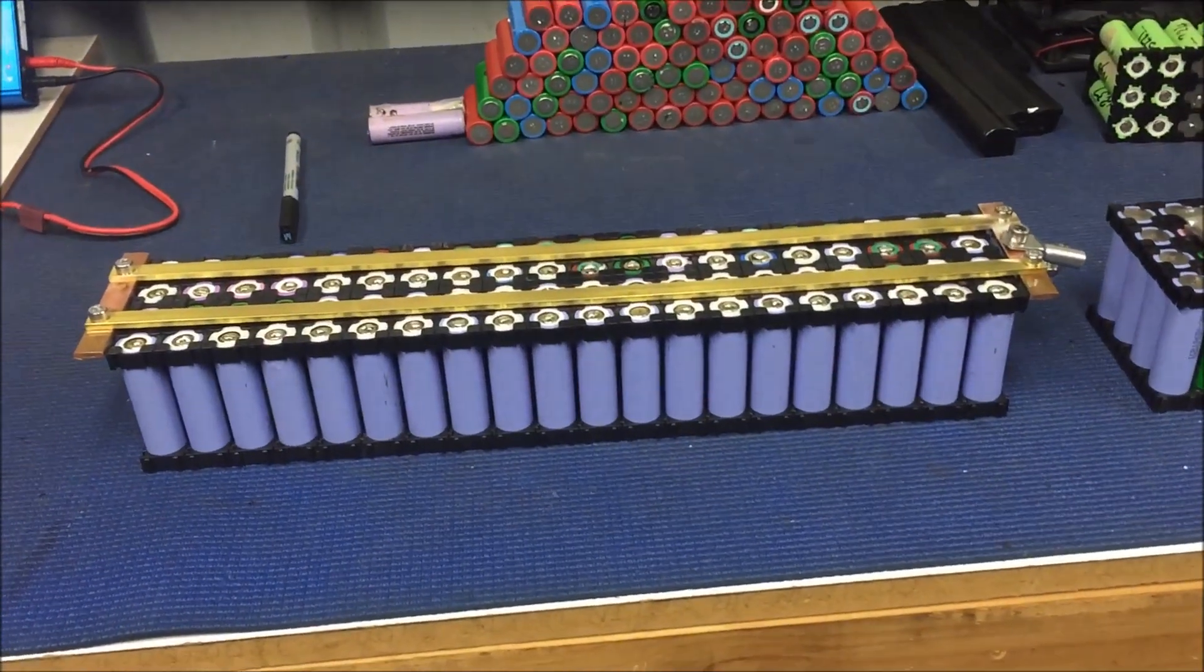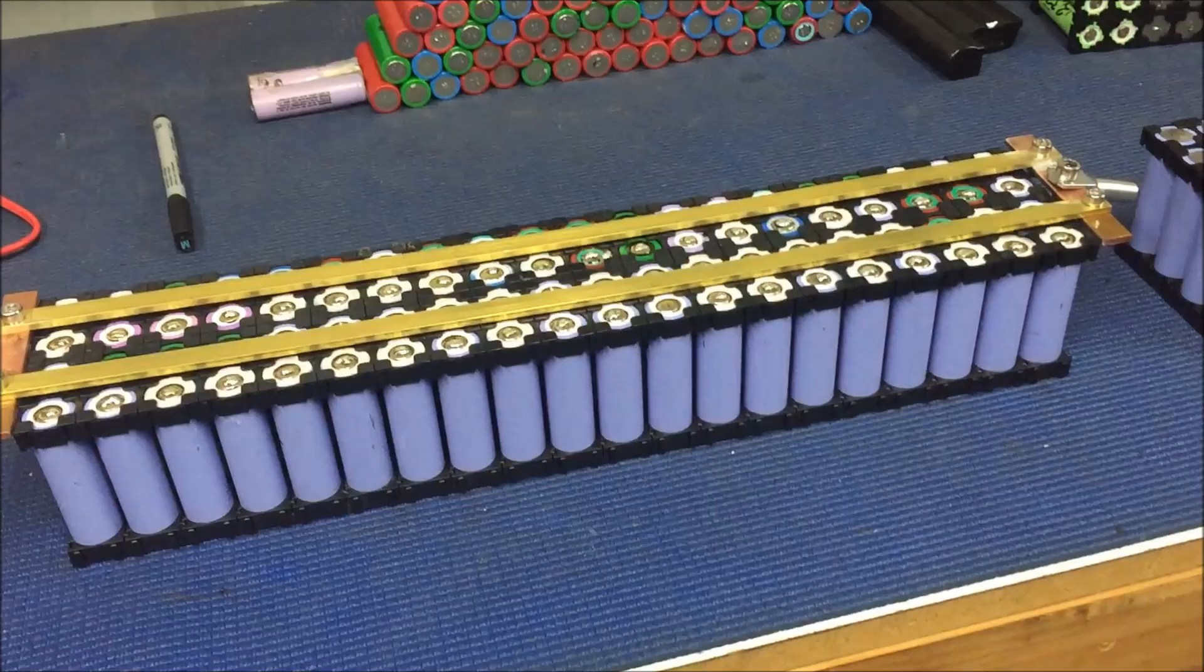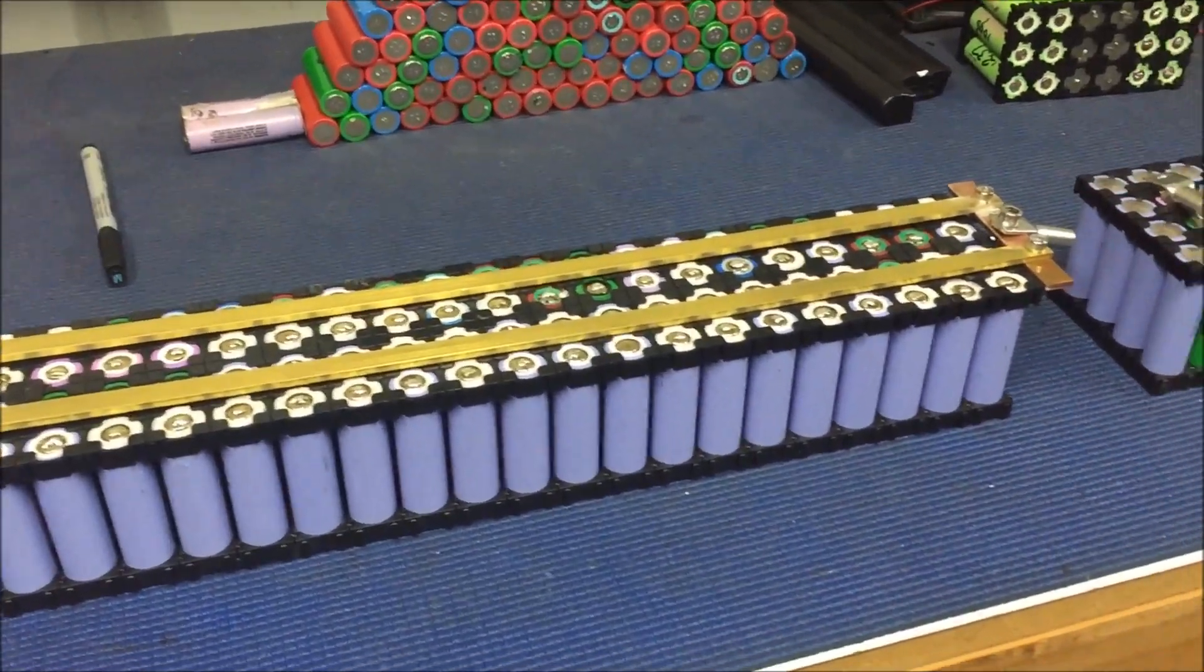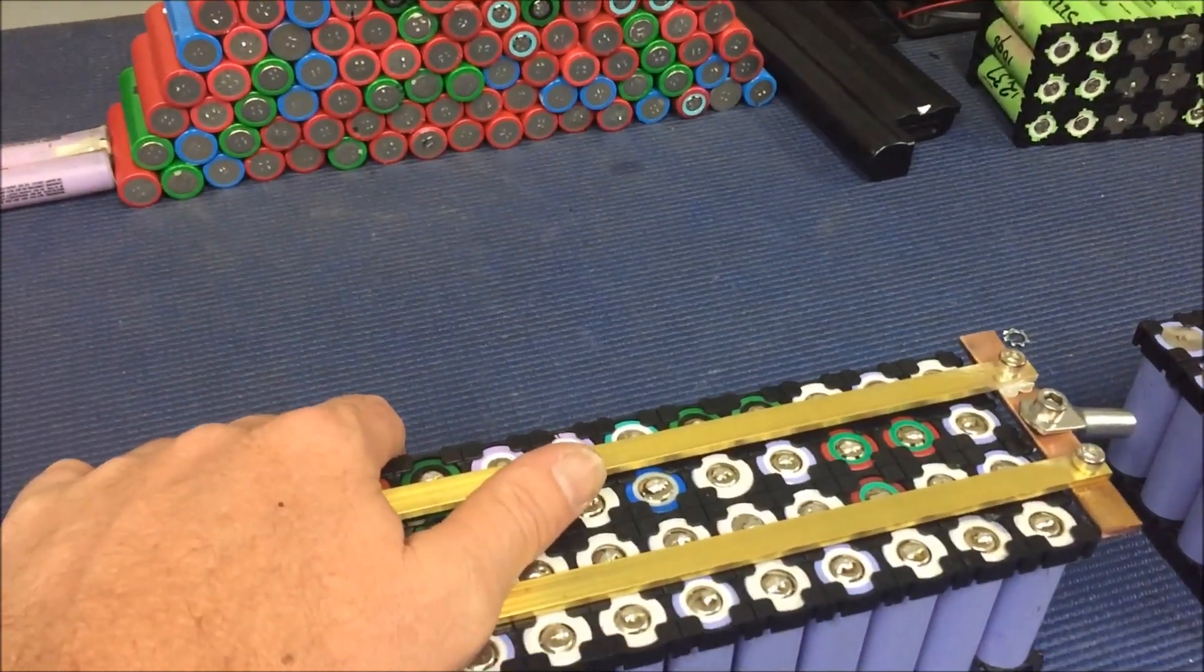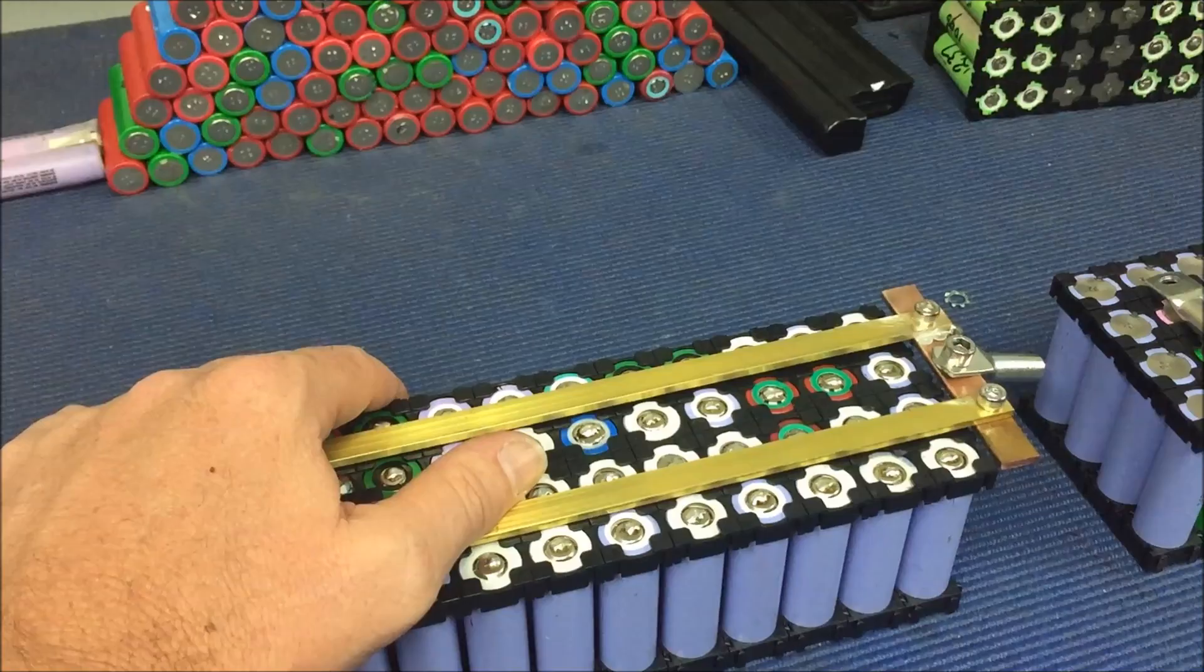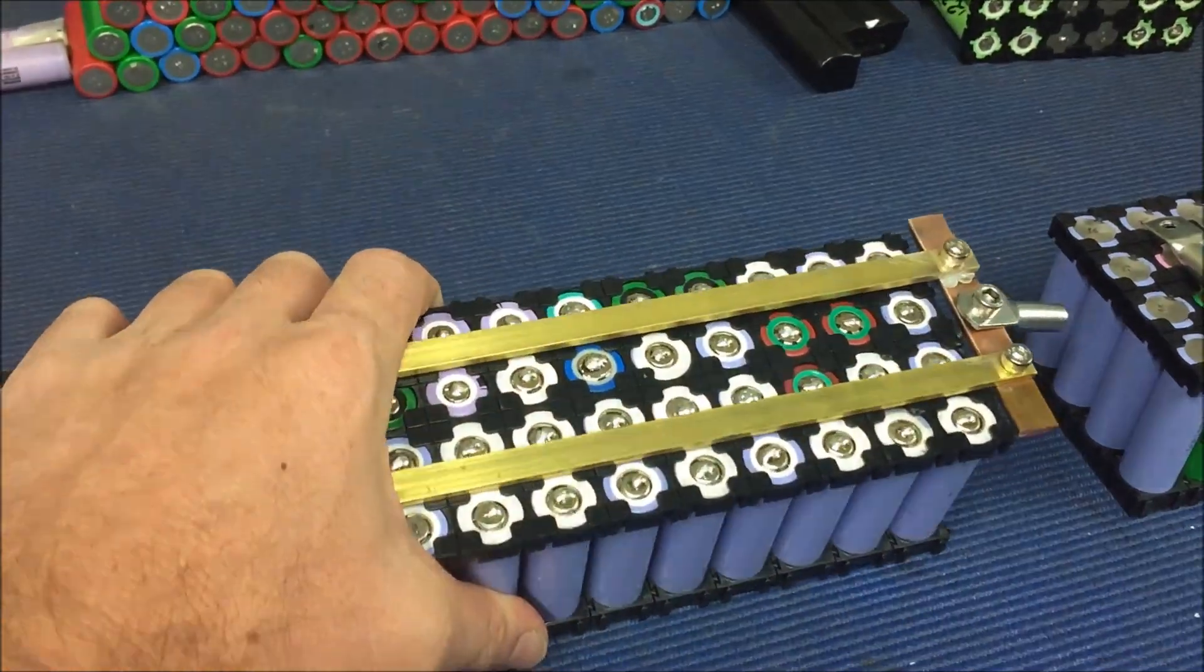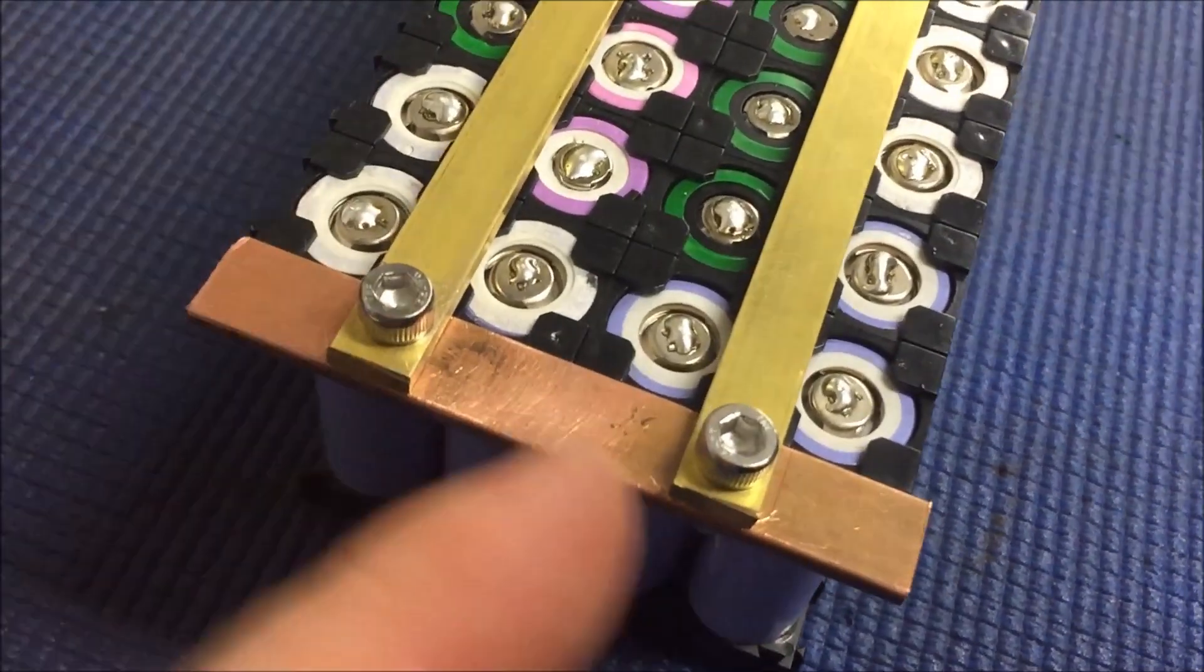G'day tubers, just addressing a couple of questions I've had, or rather one-word comments such as overkill. I don't actually think it's overkill, but my plan with these bus bars is I'm actually going to cut these off here and here and round this off so it makes it all look nice.